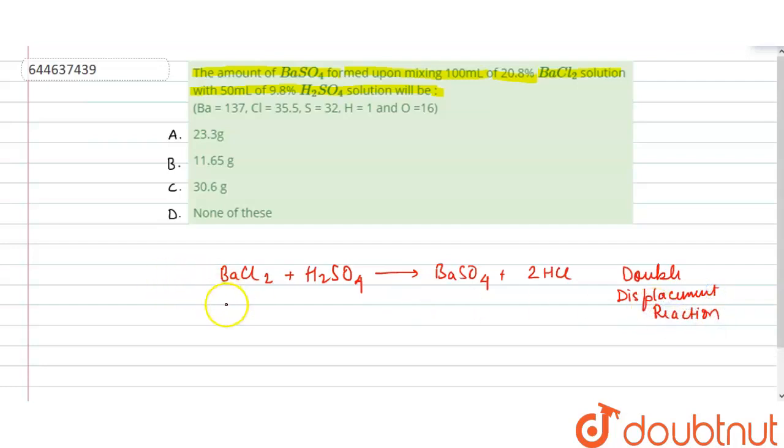If we see, 1 mol of barium chloride on reaction with 1 mol of H2SO4 will give 1 mol of barium sulfate and 2 mols of HCl. Here, let's look at what are the given quantities to us.